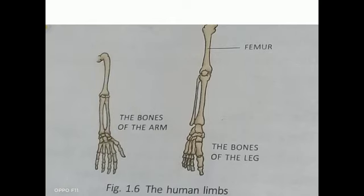The powerful thigh bone is called the femur. Femur bones bear the weight of the whole body. The femur is the longest bone in our body. It fits into the hip girdle with a ball and socket joint and is connected to the lower leg at the knee joint. The long bones of the skeleton are hollow and are filled with a soft fatty substance called bone marrow.